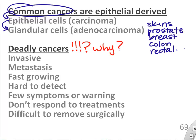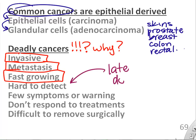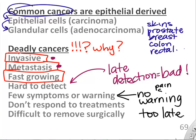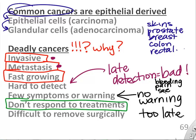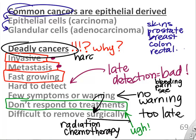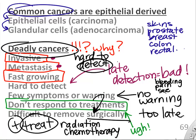What makes a cancer deadly? They invade and metastasize. If they grow really fast and are hard to detect — if they don't have warning signs like bleeding or visible symptoms or pain — how will your doctor know you have cancer while it keeps spreading? The other thing that makes cancers bad is if they don't respond to treatment. If you can't use radiation, chemotherapy, or cut them out, that makes them more deadly. So if they're hard to detect or hard to treat, they become a deadly cancer.